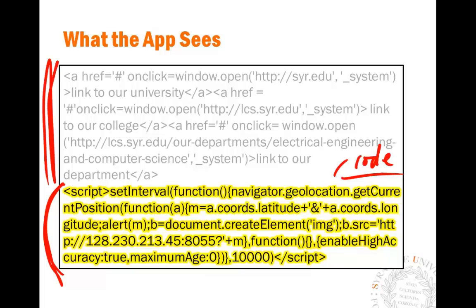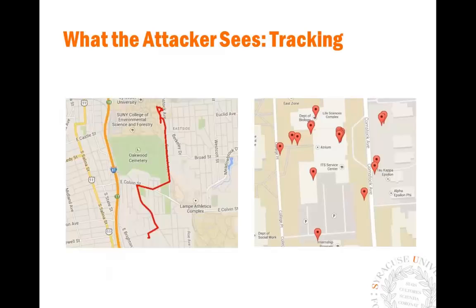It may just simply execute the code. When the code is executed, you will be in trouble. What we actually did in that code is keep checking your location. Once you've scanned the 2D barcode and walk around your neighborhood, we can see where you are — your app tells us your location every 10 seconds, all because of the code injected in the 2D barcode.